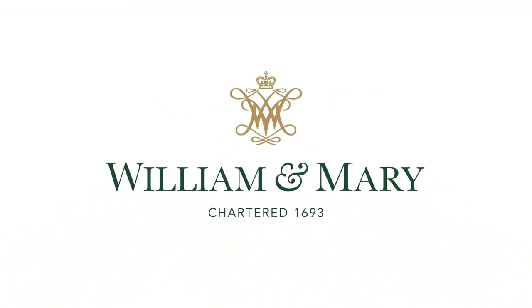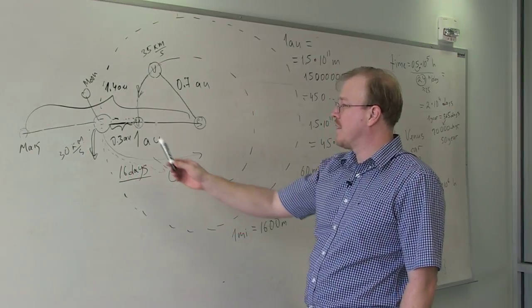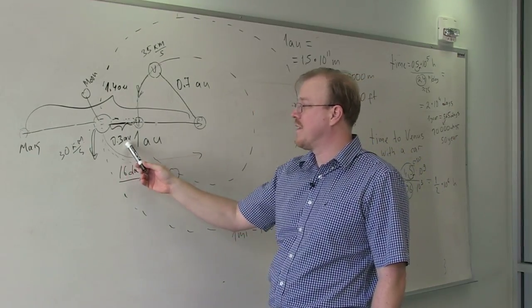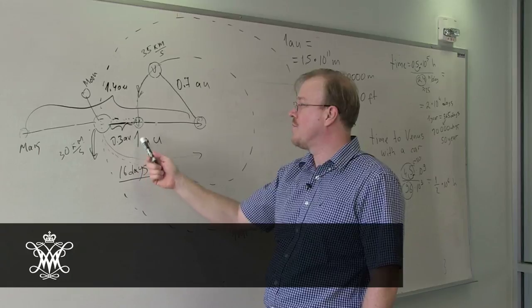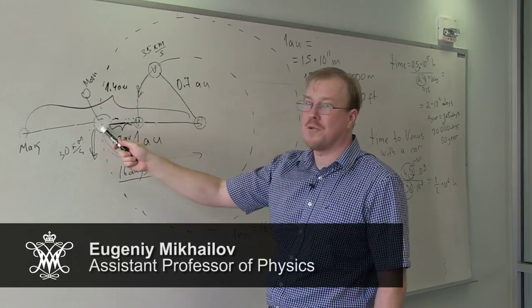So we would like to find how long it takes from Earth to Venus. Astronomers like to use a yardstick of distance which is called one astronomical unit, which is the distance from Sun to Earth.